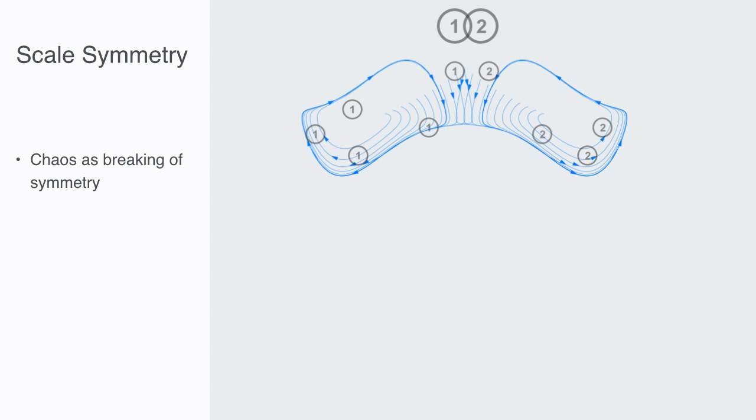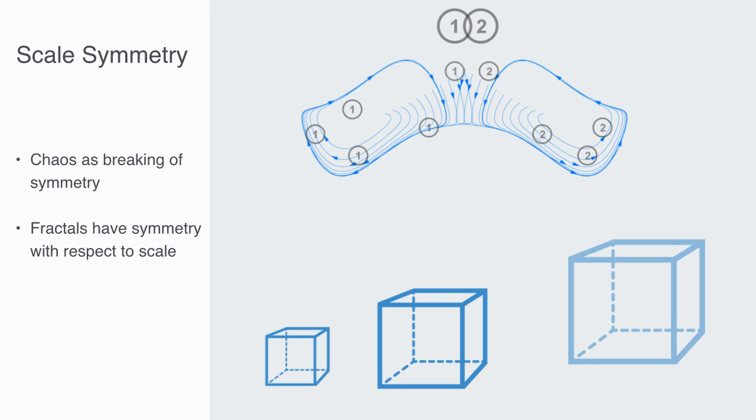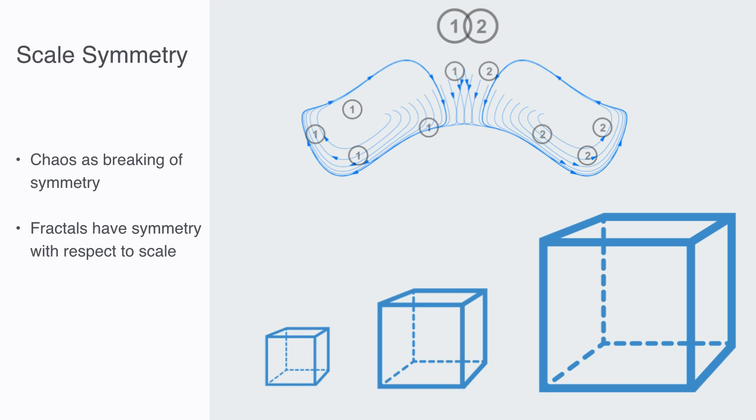Fractals have what is called scale invariance, that is, they have a symmetry with respect to scale, meaning the scale can change, but the structure will repeat itself over various levels of magnitude. This scale invariance is also called self-similarity, and it is this type of symmetry under magnification that defines fractals and gives them an amazing type of structure and order.